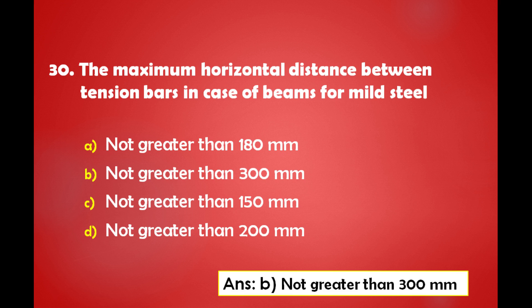The maximum horizontal distance between tension bars in case of beams for mild steel is: A) not greater than 180 mm, B) not greater than 300 mm, C) not greater than 150 mm, D) not greater than 200 mm. The answer is: the maximum horizontal distance between tension bars in case of beams for mild steel should not be greater than 300 mm.